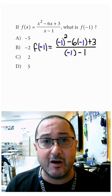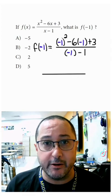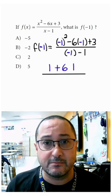Negative 1 squared is 1, negative 6 times negative 1 is positive 6, and we can bring down positive 3. On the bottom, negative 1 minus 1 is negative 2. 1 plus 6 plus 3 is 10.